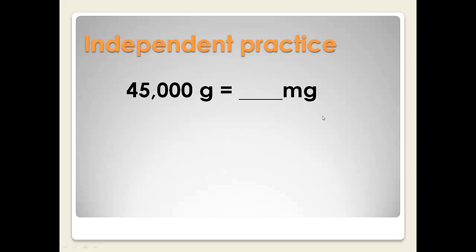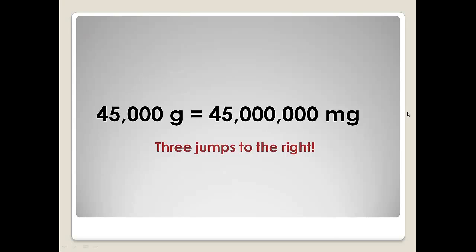Here's some independent practice for you. 45,000 grams is how many milligrams? Pause the video now, use your metric slider and figure out the answer. 45,000 grams is 45,000,000 milligrams. Three jumps to the right. I'm sure you did that right. Here's some more for you to practice on your own.